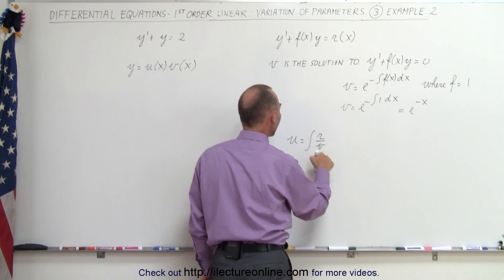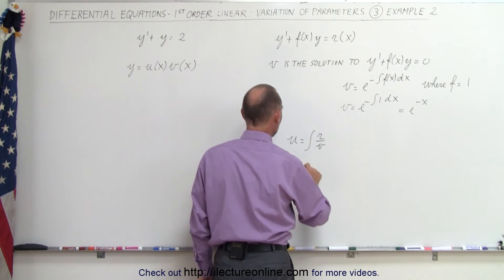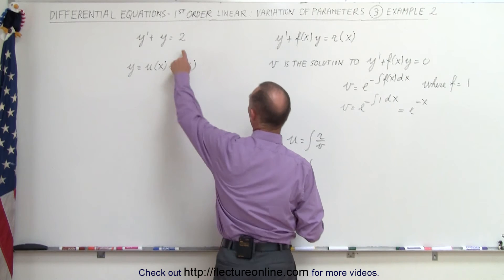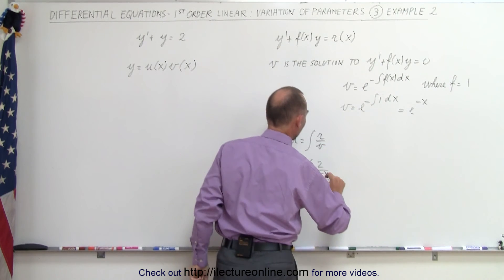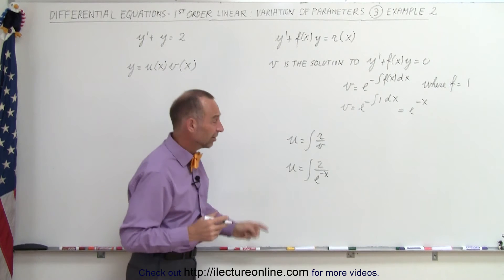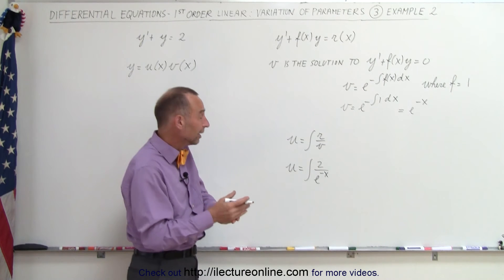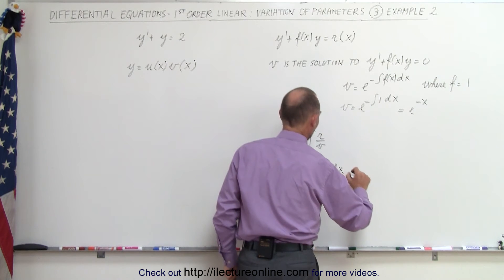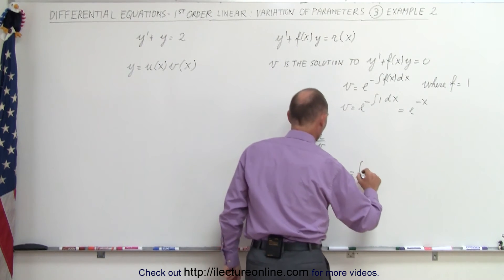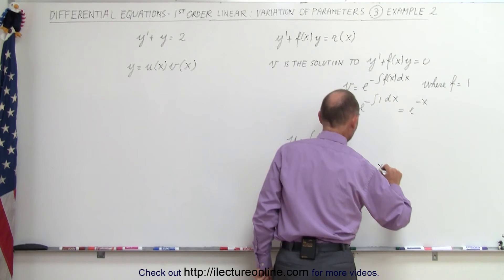And then u would be r divided by v. So therefore, u is equal to the integral of r, which is 2, divided by v, which is e to the minus x. e to the minus x in the denominator can be moved to the numerator and can be called e to the x, and also need a dx in there. So this can be written as the integral of 2 e to the x dx.